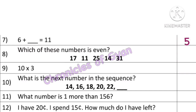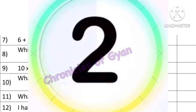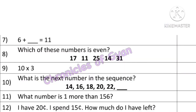Question 8: Which of these numbers is even — 17, 11, 25, 14, or 31? Any number that can be exactly divided by 2 is called an even number. An even number always ends with the last digit as 0, 2, 4, 6, or 8. For example: 2, 4, 6, 8, 10, 12, 14, 16 — these numbers can easily be divided by 2.